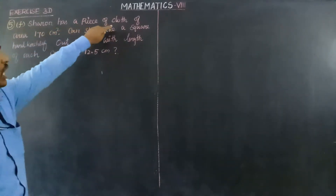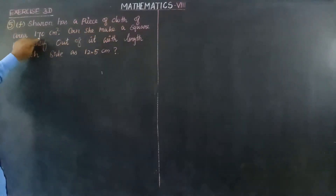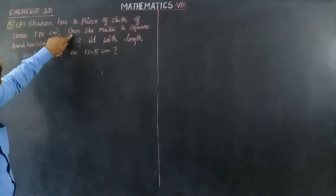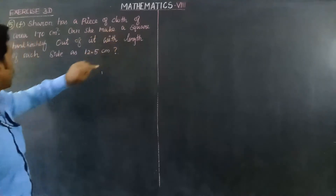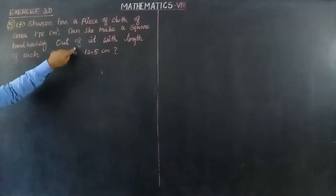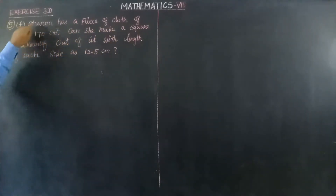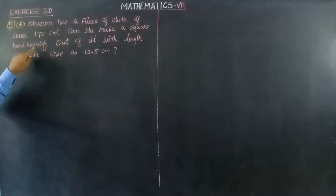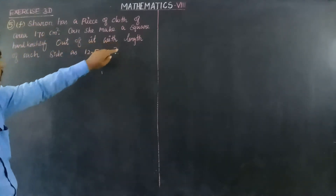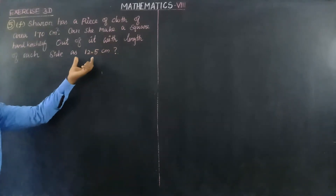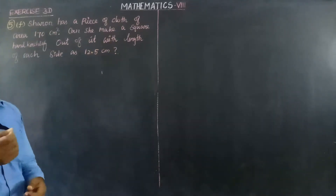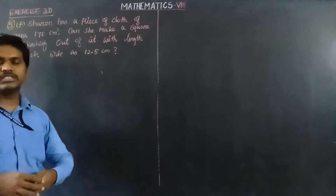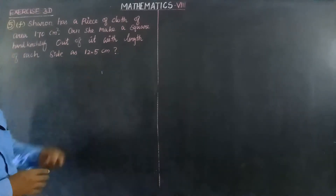So Sharon has a piece of cloth of area 170 cm square. The question is: can she make a square handkerchief out of it? We have to make a square handkerchief with a length of each side as 12.5 cm. So with 12.5 cm as the side, we have to make a handkerchief.